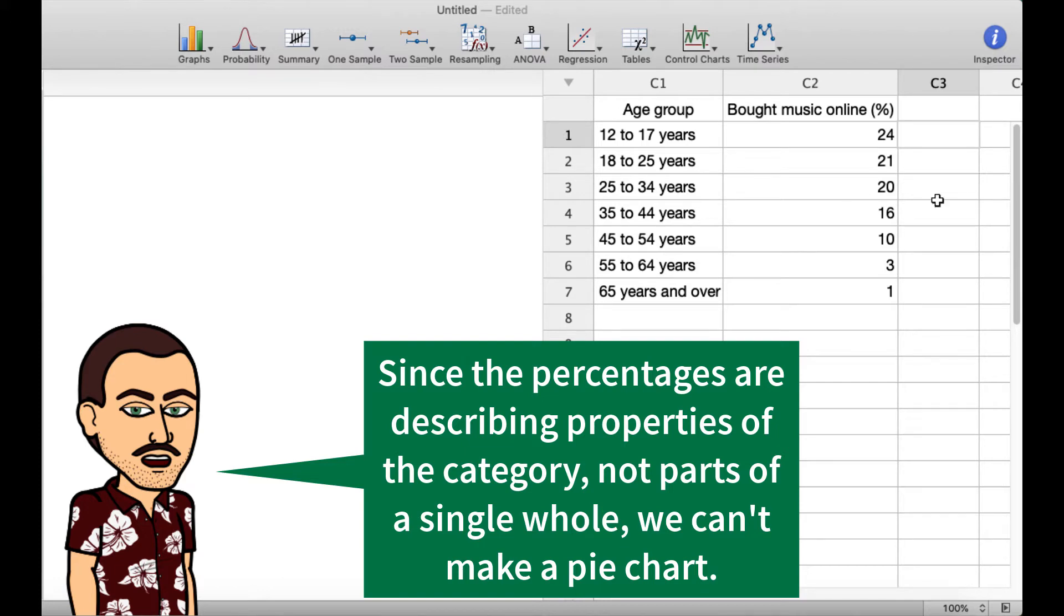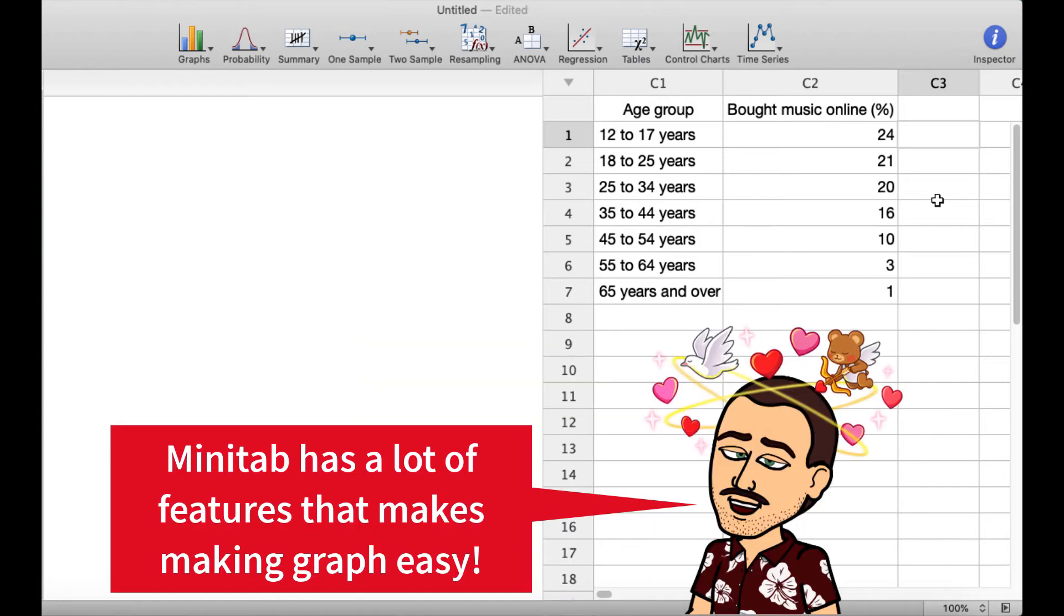What this does not say is that 24% of the entire music buying population was 12 to 17 year olds. If that was the case, then we would use a pie chart. But that's not what it says. It's saying out of all of the 12 to 17 year olds, 24% of them bought music online.